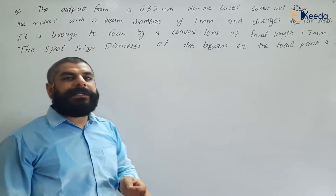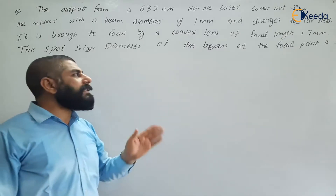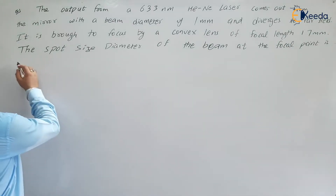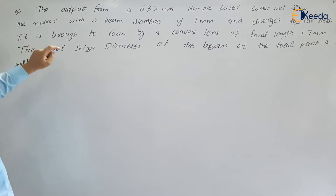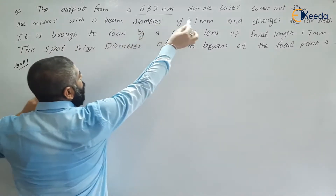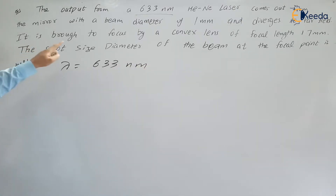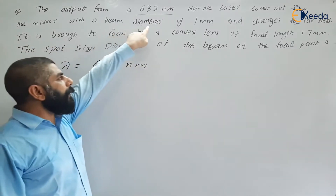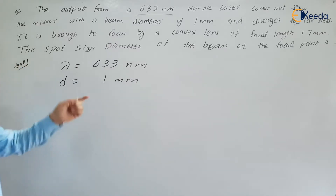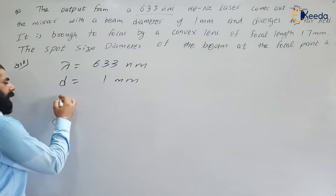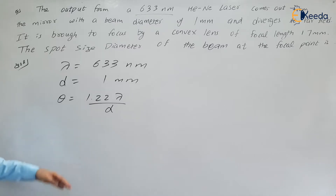In a laser we have studied two points: one is the divergence angle and second is the angular spread. The angular spread theta is given by 1.22 lambda by d. The wavelength lambda is given as 633 nanometers, and the aperture diameter d is given as 1 mm, so we can calculate the angular spread.